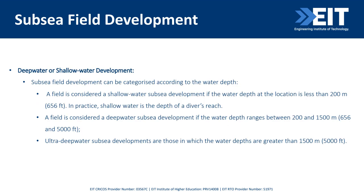For the deep water versus shallow water decision: a field is considered shallow water if the water depth is less than 200 meters — within diver's reach. Deep water ranges between 200 meters and 1,500 meters. Ultra-deep water subsea development covers depths greater than 1,500 meters. So we have shallow water, deep water subsea, and ultra-deep water subsea development.